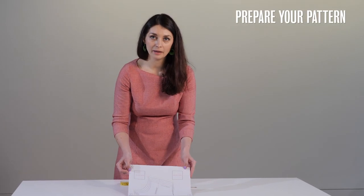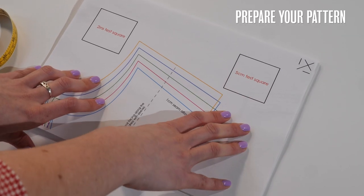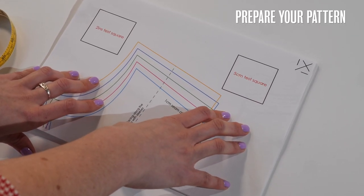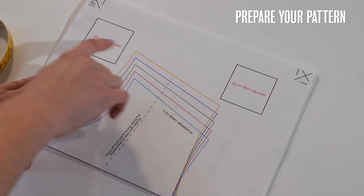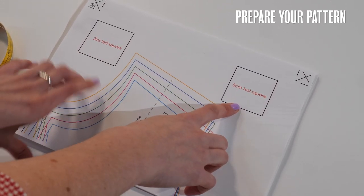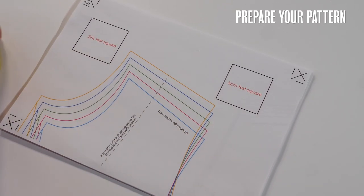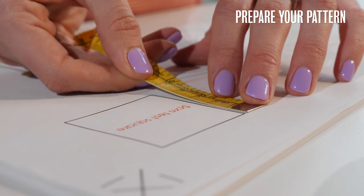So now I've printed out my pattern and first thing I've done is to just print out the first page to check that it's printing at the correct size. So you'll see that there's a test square, there's actually two and I just want to take my measuring tape and check that that matches.